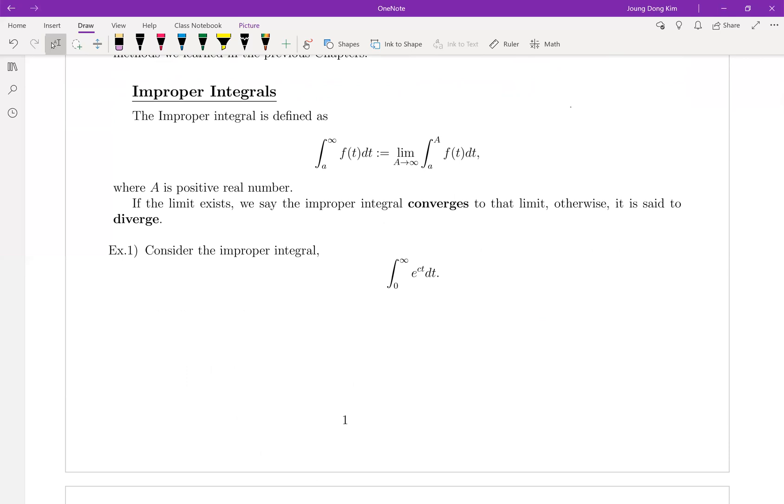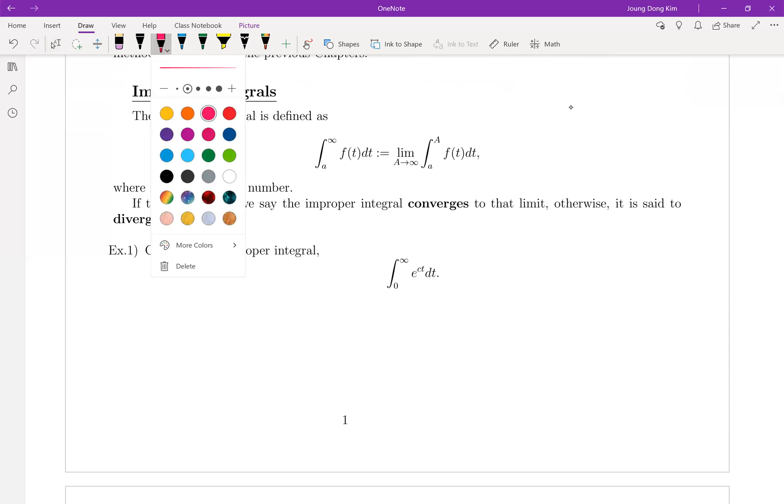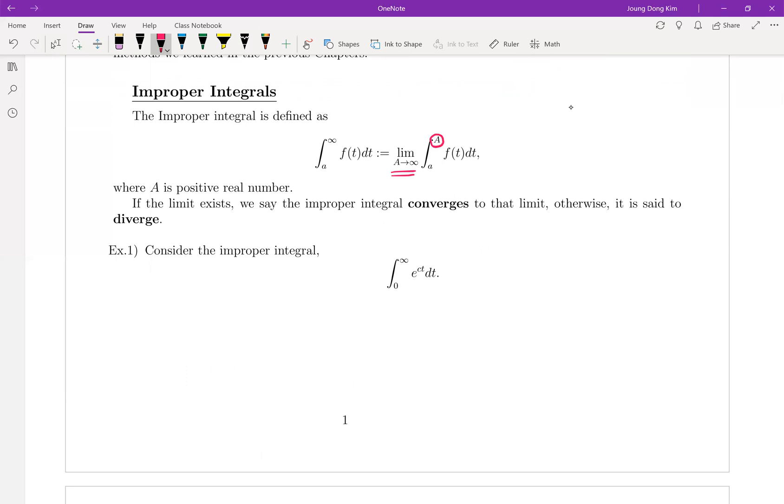So improper integral means one side of the integral is infinite. Then as you remember it is defined this way: just make infinite as a, then send a to infinite. This is the way to take care of the improper integral. Let me give you a couple examples.